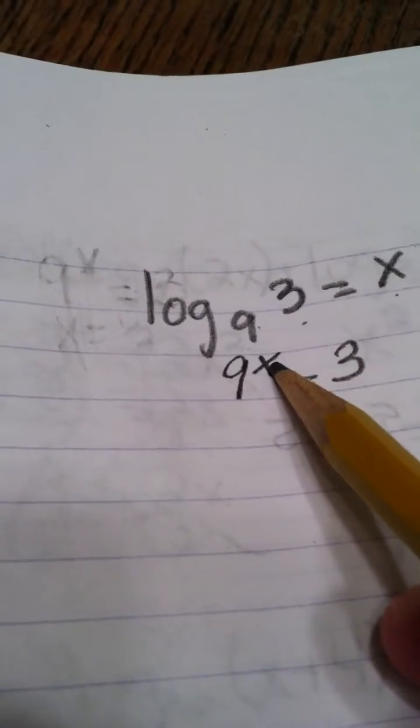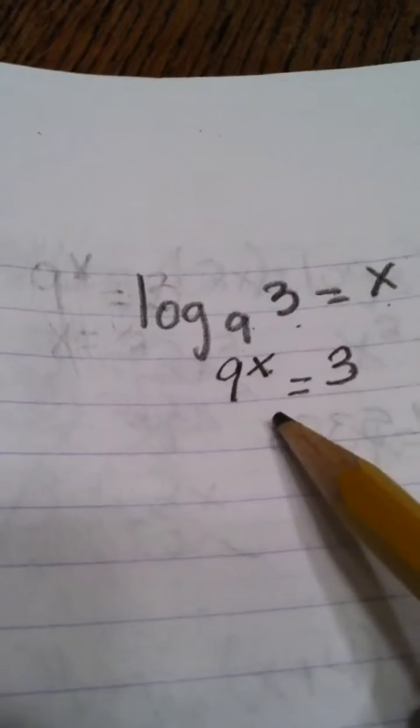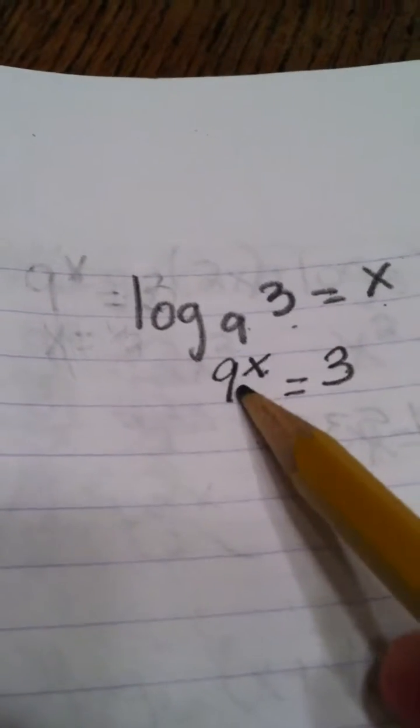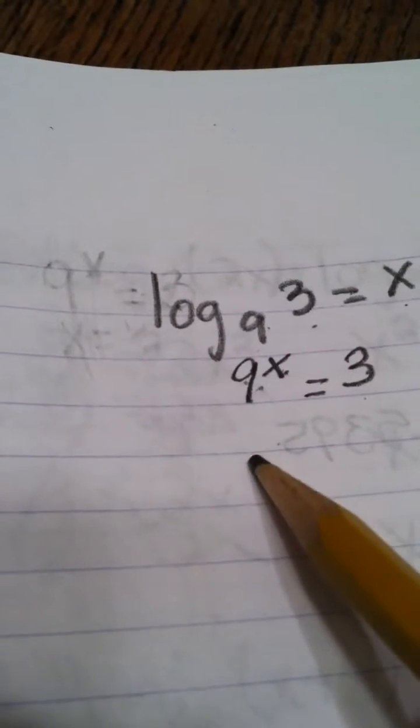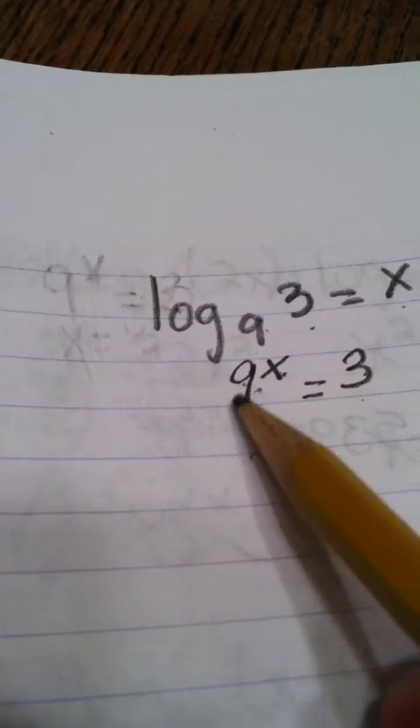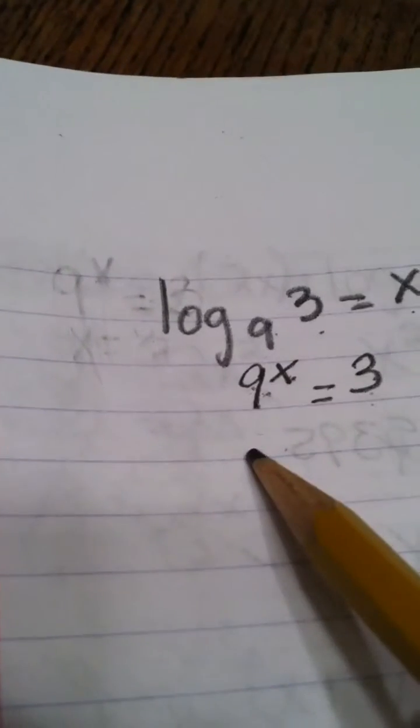Now to find x, you have to think of what 9 to what power will give you 3. So the only way that you can do this is to square root the 9 in order to give you 3.